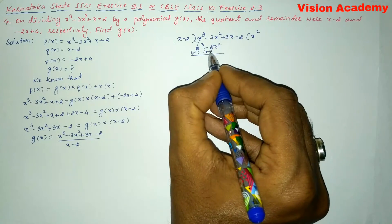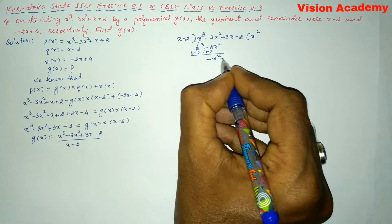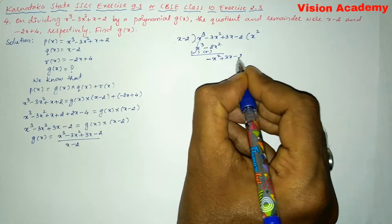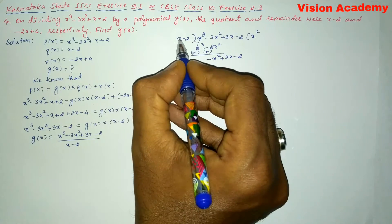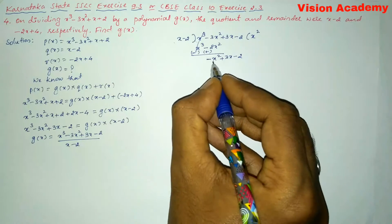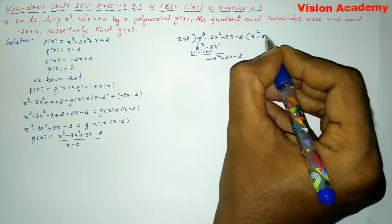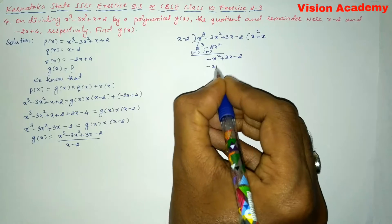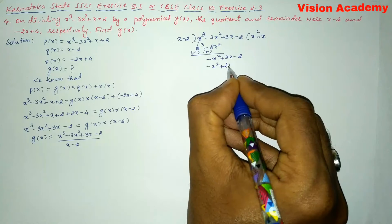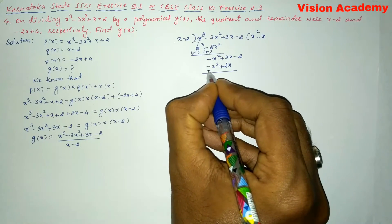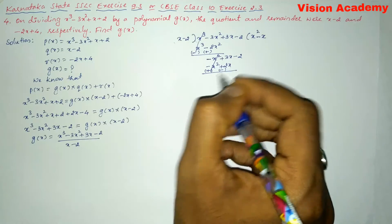After subtraction, minus 3x² plus 2x² gives us minus x², and we bring down plus 3x and minus 2. Now the first term is minus x². What do we need to multiply with x to get minus x²? We multiply by minus x. Minus x into x is minus x², and minus x into minus 2 is plus 2x. Subtract — change signs — plus x² and minus x² cancel.